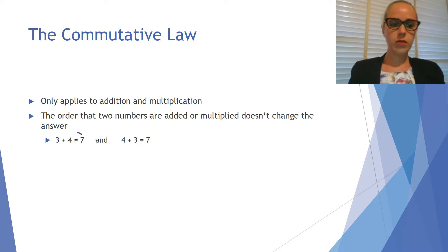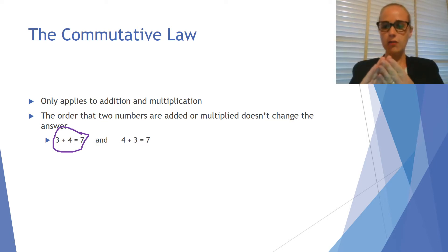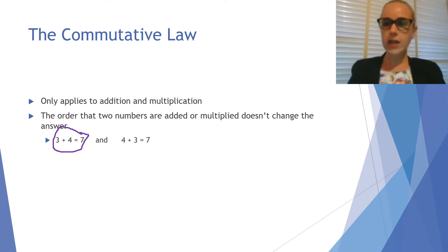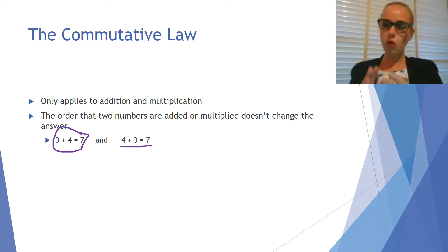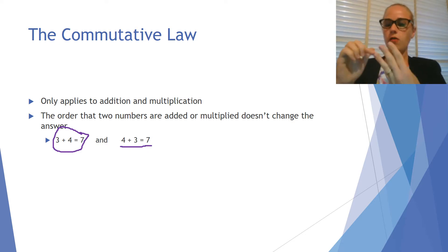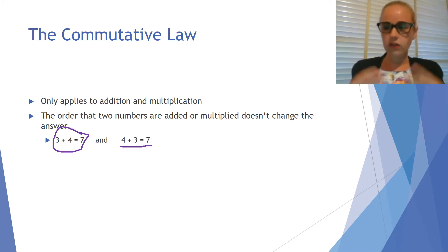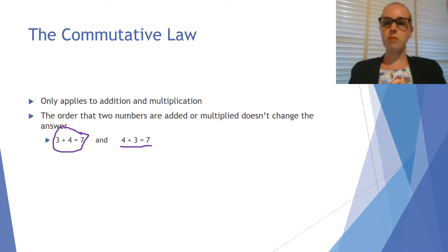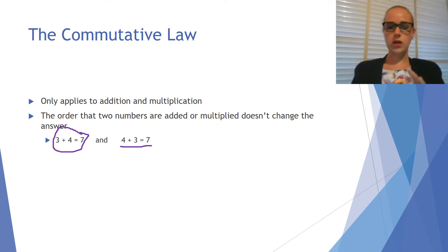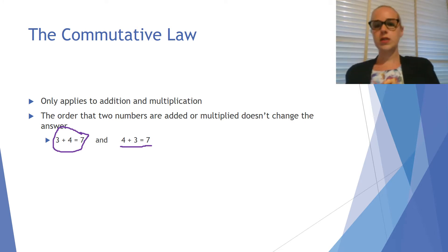For example, if we look at 3 plus 4 equals 7, if we start at 3 and then add 4 — so we go 3, 4, 5, 6, 7 — we get to 7. If we look at the other order and start at 4 and then add 3 — so we go 4, 5, 6, 7 — we still get to 7. This is grade one maths, but this is what the law is called that says it's mathematically valid to do this for addition — that it doesn't matter what order you do it in. That 3 plus 4 is the same as 4 plus 3.